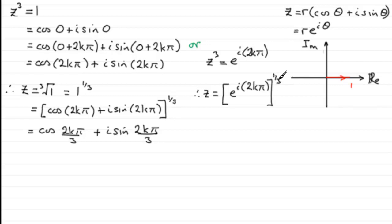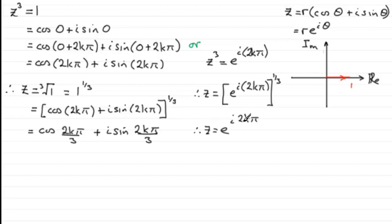Multiplying the powers together gives z equals e^(i·2kπ/3), which is an equivalent statement to the mod-arg result. So you can use either the mod-arg form or the exponential form — it's up to you.